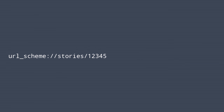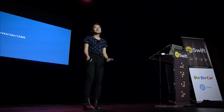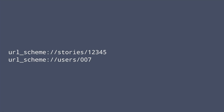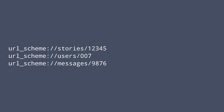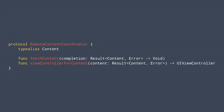As we were implementing more push notifications, we realized we had to apply the same pattern to everything else as well — for example, showing a user's profile, or showing a message from some friend. Wouldn't it be nice if we could make this a little more generic? So we defined a protocol called the RemoteContentCoordinator. It has a type alias — content — which can be a story, a user, a message, whatever you want.